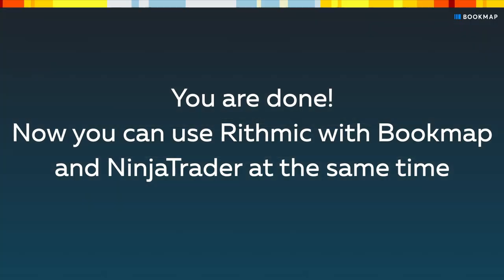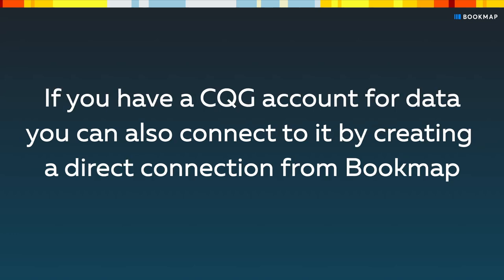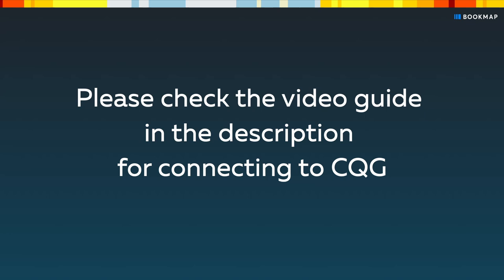That's it, you're done. Now you can use Rhythmic with Bookmap and NinjaTrader at the same time. If you have a CQG account for data, you can also connect it by creating a direct connection from Bookmap. Please check the video guide in the description for connecting to CQG.